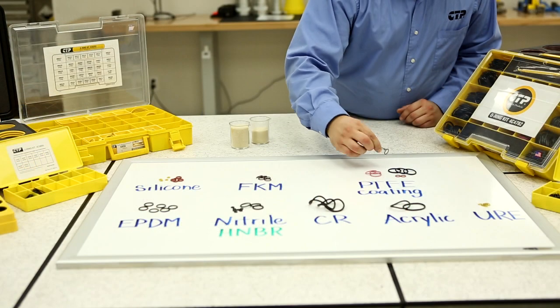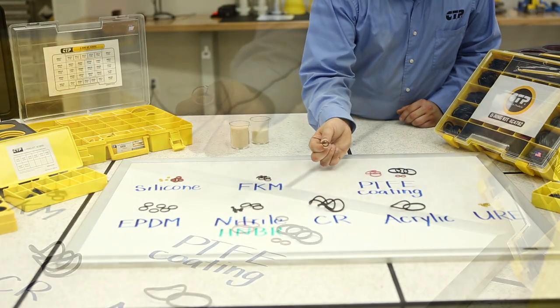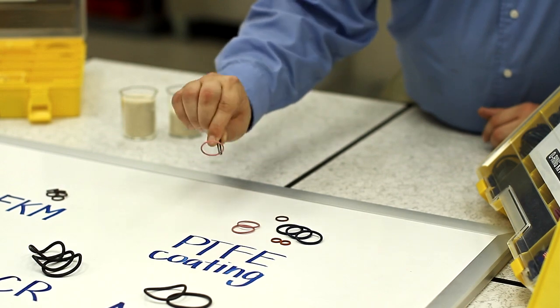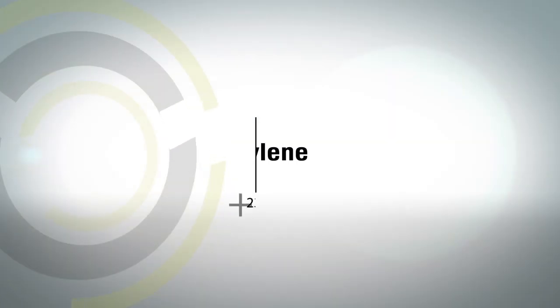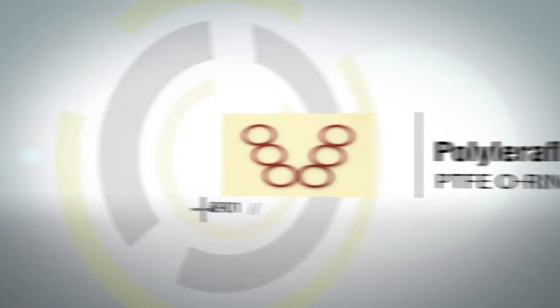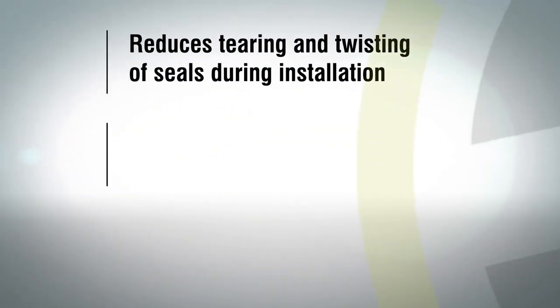We offer CTP O-ring seals that are also made with a special polytetrafluoroethylene or PTFE coating. This coating reduces the tearing and twisting of seals at the moment of installation as well as lowering the initial running friction.